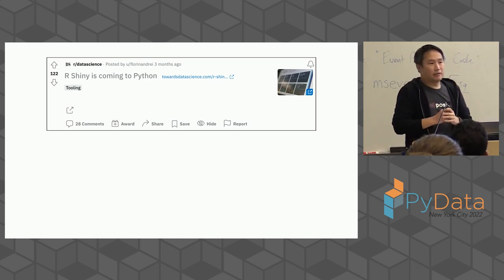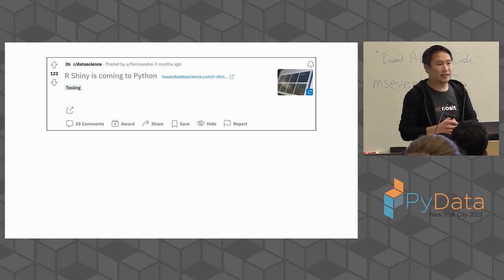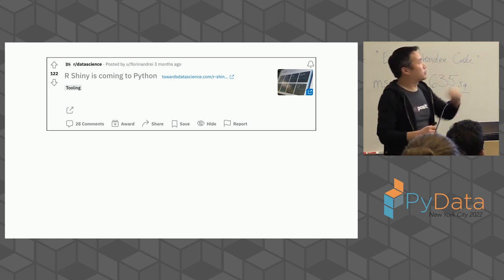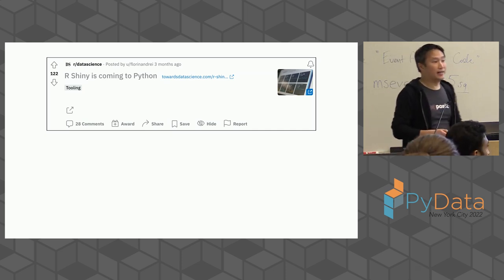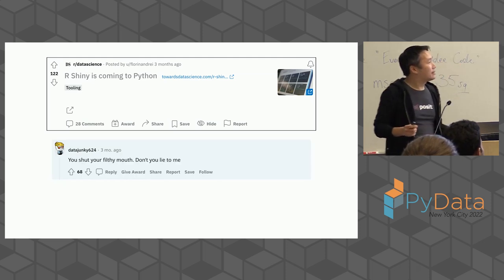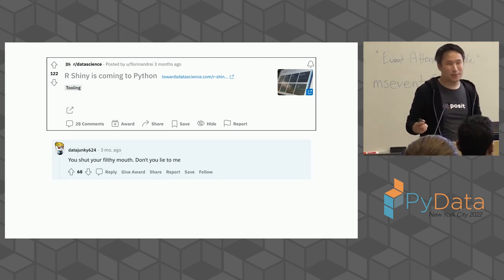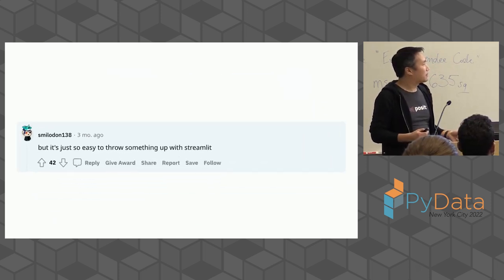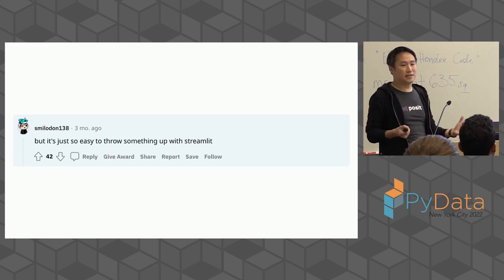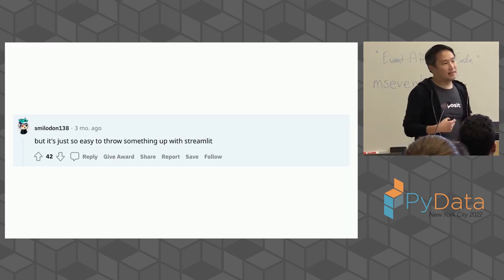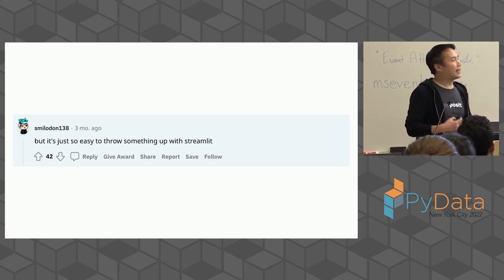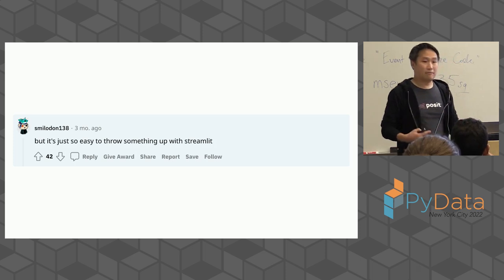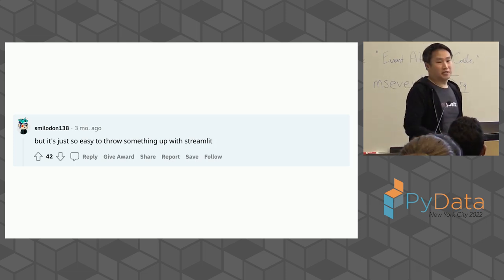This summer we announced Shiny for Python, and of course when it was announced it made it to Reddit. People had a variety of reactions — some were excited, and others said: 'It's just so easy to throw something up with Streamlit.' This idea has come up again and again since our announcement. I don't hear it so much about other Python app frameworks, but over and over: 'But Streamlit is just so easy.'